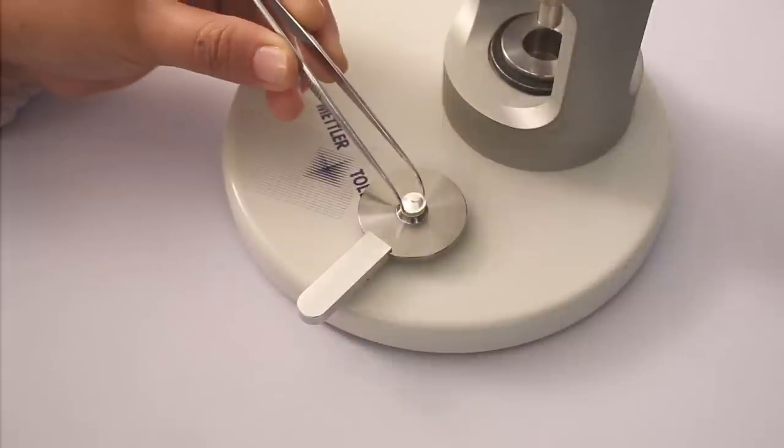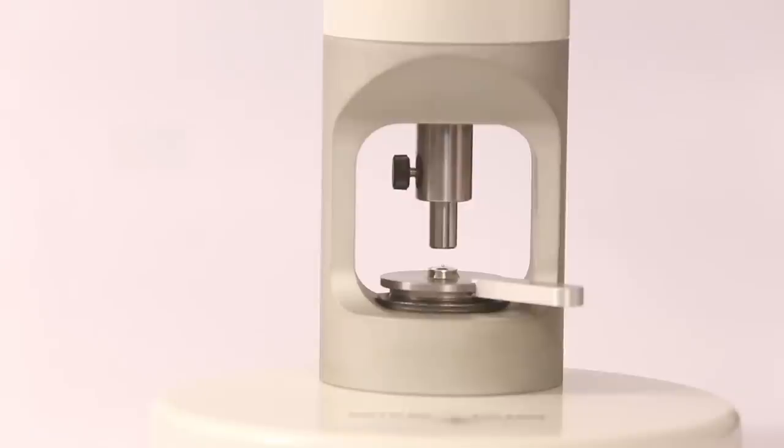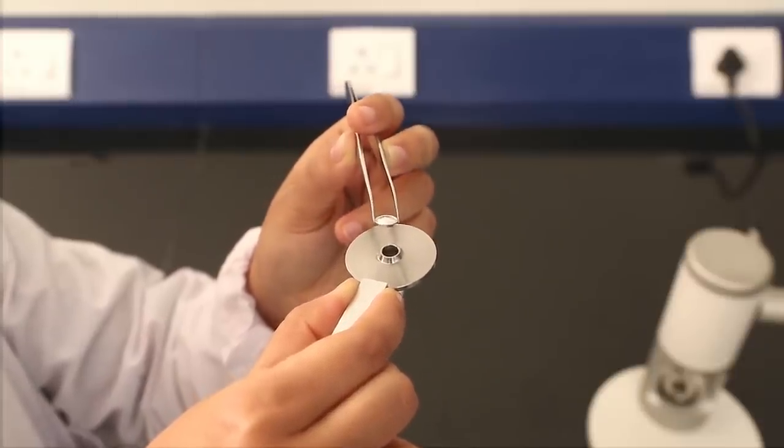Close the crucible using the crucible press. Place the crucible on the die of the press. Apply the crucible lid. Center it and rotate the lever to move the plunger down until its resistance is overcome. The lid is now cold welded to the crucible rim.